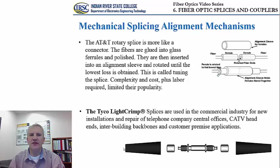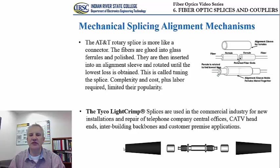AT&T offers a rotary splice that looks more like a connector. Fibers are glued into a glass ferrule, polished, and inserted into an alignment sleeve. They are then rotated until the lowest loss is obtained — so-called tuning of the splice. The complexity, cost, and labor involved mean rotary splices are not as popular as other techniques. Finally, the LightCrimp offered by Tyco is used in commercial installations for new installations and repair of telephone company central offices, inter-building backbones, and customer premise applications.